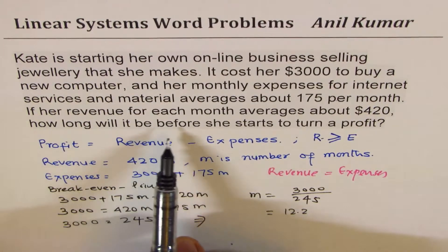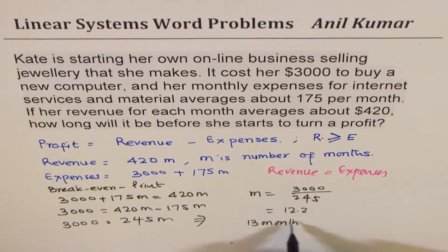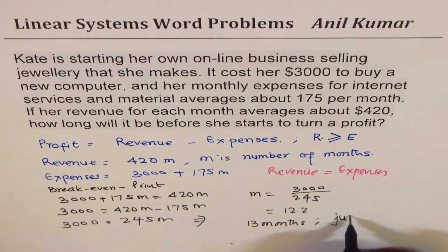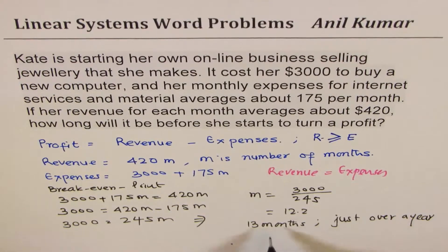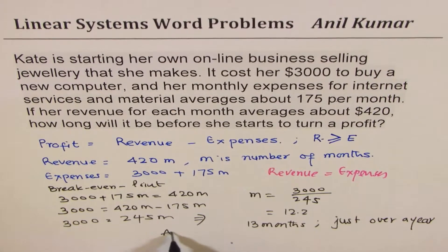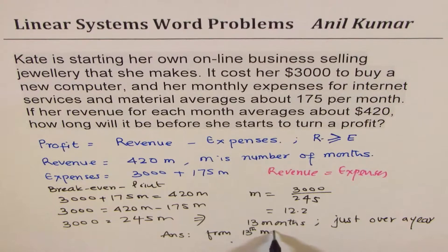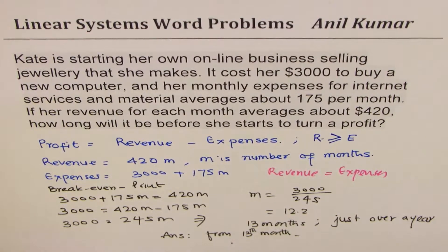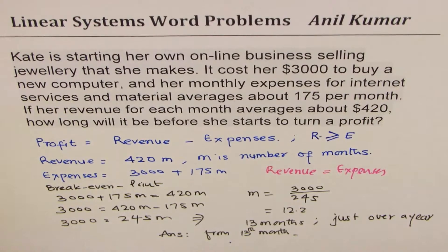So it says, how long will it take? More than a year — so you can say 13 months. It will take just over a year for her to break even. I hope the concept is clear to you. We will take more examples based on linear systems in this playlist.